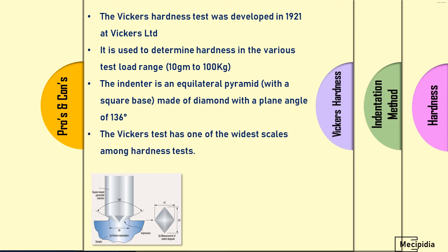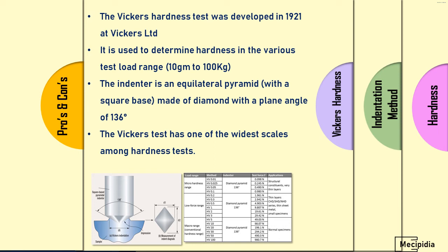Vickers hardness has one of the widest scales among hardness tests. You can check materials all across the range — from steel to copper to aluminium. You can see the table here showing micro hardness range, low force range, and macro range, which is the conventional hardness range. It covers all materials, even thin sheets and small specimens. That is why Vickers hardness (HV) is widely used in automobile engineering and most mechanical engineering fields.